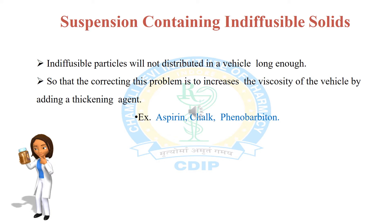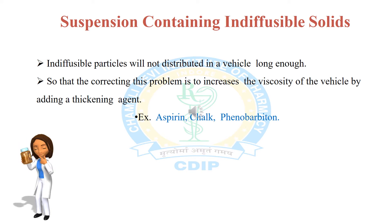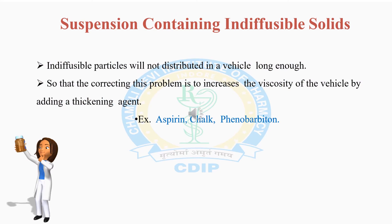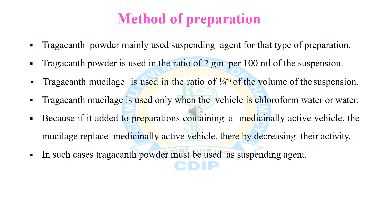Tragacanth powder and tragacanth mucilage are used as thickening agents in the formulation of suspensions containing indiffusible solids. Examples of indiffusible solids are aspirin, chalk powder, and phenobarbitone. Since indiffusible solids do not dissolve and do not remain suspended in a vehicle, viscosity is increased by the addition of tragacanth powder or tragacanth mucilage as the suspending agent.